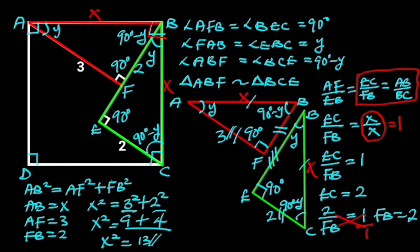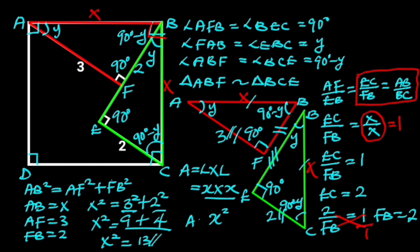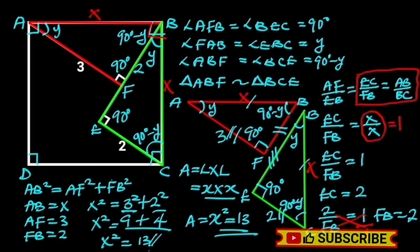Let's remember that our aim is to find the area of the square. The area of a square is length times length. Since we used X as the length of the square, the area is X times X, which is X squared. Hence, the area of the square is X squared, and we have X squared as 13. And this is the area of the square. Thanks for watching — if you liked this video, make sure to subscribe for more.